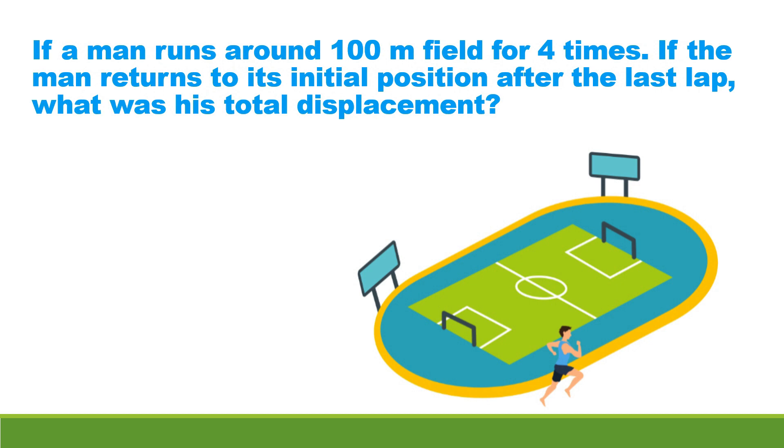If a man runs around a 100 meter field for four times, and if the man returns to his initial position after the last lap, what was his total displacement? 400 meters? If this was your answer, then you're referring to distance. Now if it's zero, then great job! You are on the right path! And that's why we're here, to distinguish each quantity from one another.